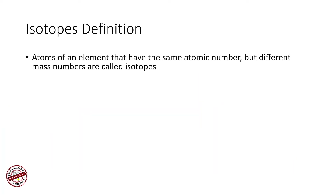Definition of an isotope: atoms of an element that have the same atomic number but different mass numbers are called isotopes. Isotopes show similar chemical characteristics but they may have slightly different physical properties. For example, carbon-12 and carbon-13 — this is how we represent isotopes: write the symbol of an element and put a number beside it which is the mass number.